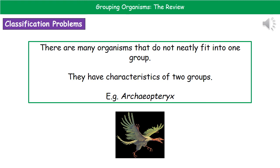The last thing to consider is the problems associated with classification. The biggest problem is that many organisms don't neatly fit into one group — they have characteristics that would place them into two different groups. The best example is Archaeopteryx, which is an extinct creature. You can see from the picture that it has features from both birds and reptiles, making it quite hard to classify.